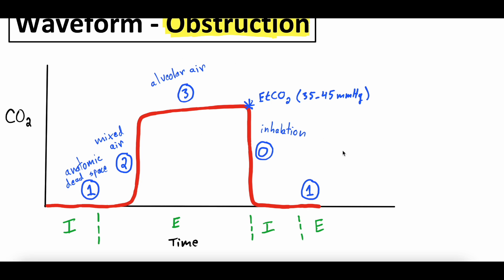Briefly though, just to go over the normal waveform. This is a normal end-tidal capnographic waveform. It's got end-tidal CO2 on the Y axis, time on the X axis. There are four different phases starting at phase 0, 1, 2, and 3 that represent different parts of the inspiratory and expiratory cycle. It starts with inspiration.